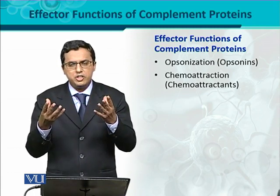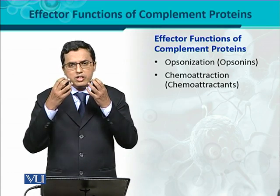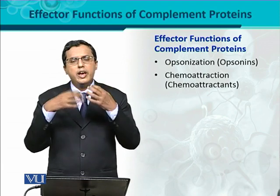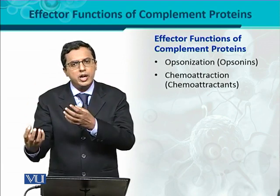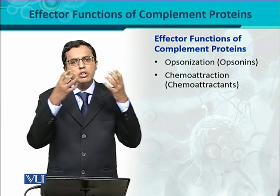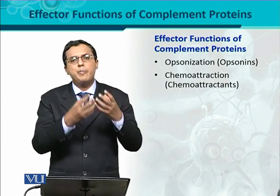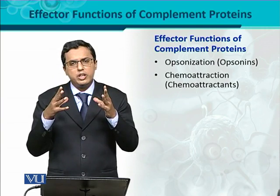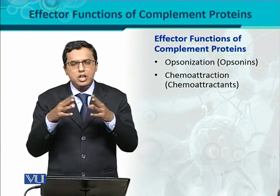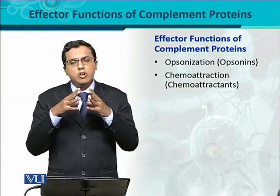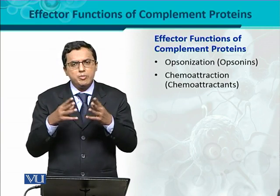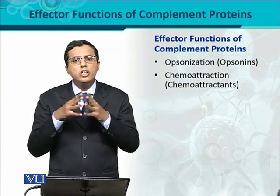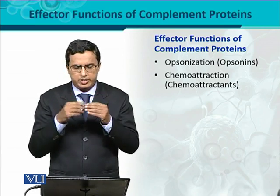These complement proteins themselves act as chemoattractants — when they are produced as a result of complement activation, signals go to phagocytes that they have to move from the blood to the site of infection, where there is infection and inflammation. This process is called chemotaxis, and complement proteins performing this function are called chemoattractants.